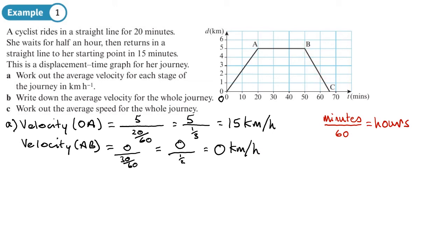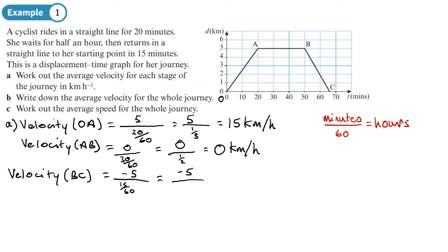For the last part of the journey, from B to C: with velocity we need to consider direction. Since she is moving back to where she started, this is a negative displacement of −5 kilometers. So velocity = −5 ÷ (15/60) = −5 ÷ (1/4) = −5 × 4 = −20 kilometers per hour.